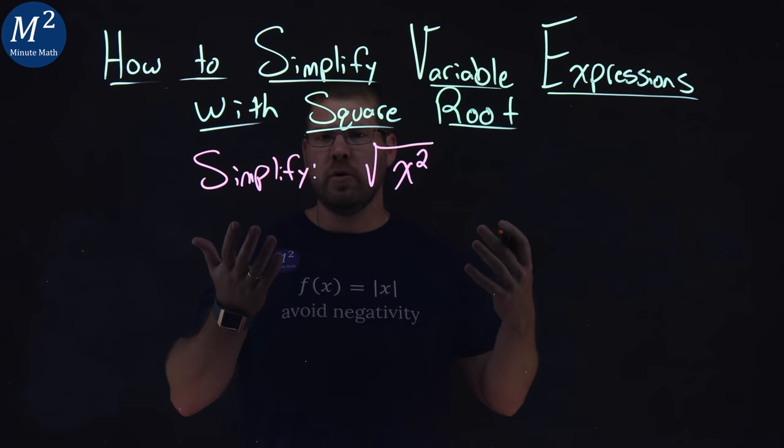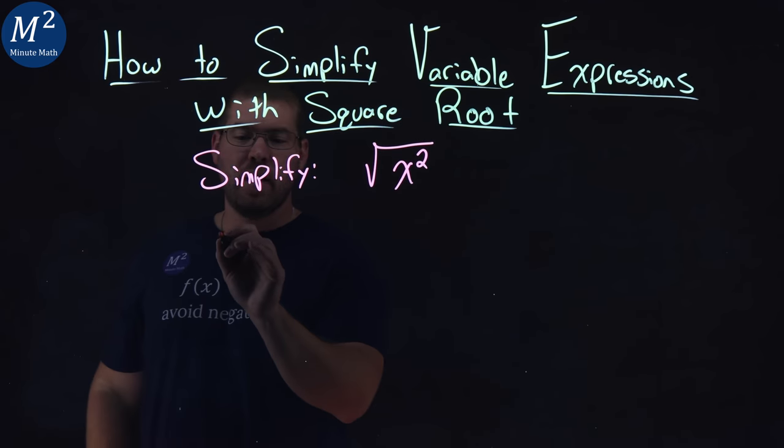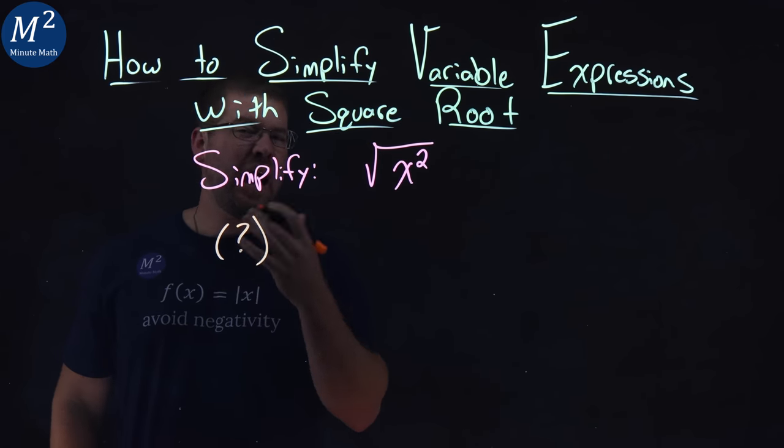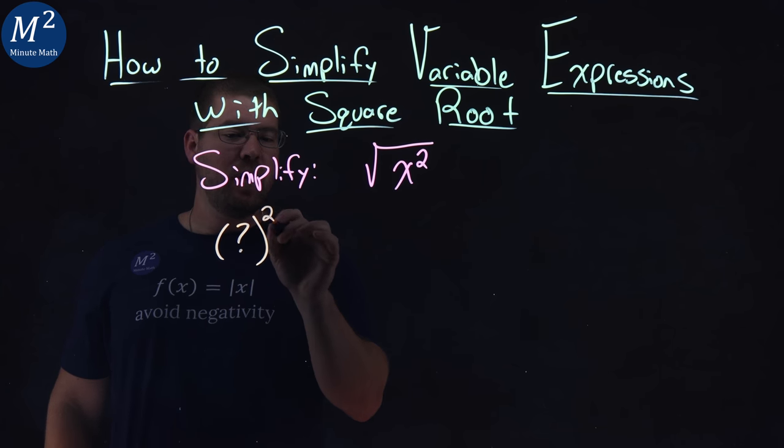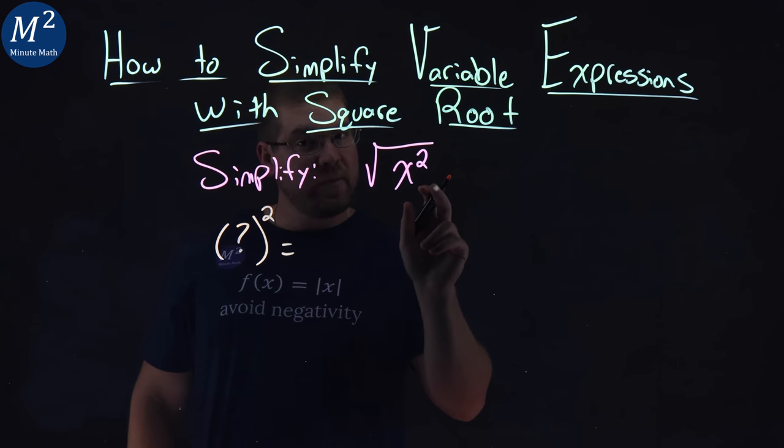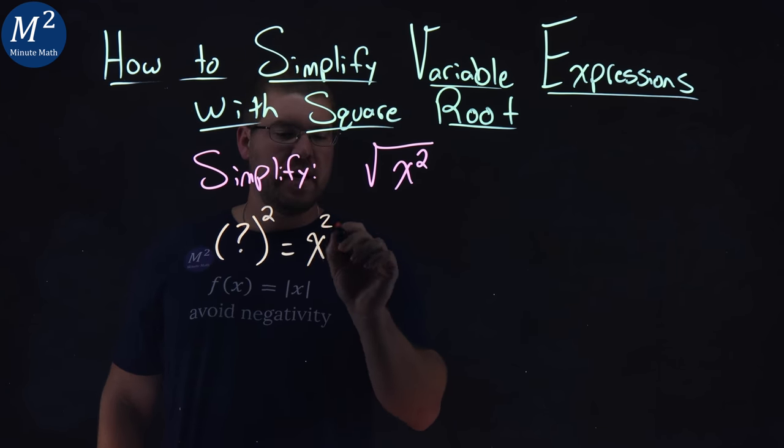The question of a square root is really asking us what number or what value, when we square it, equals what's inside the square root, which is x squared.